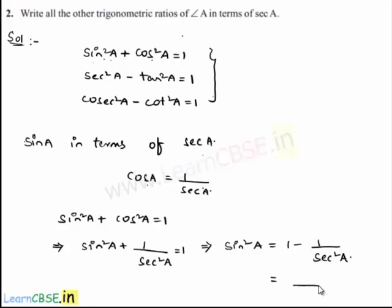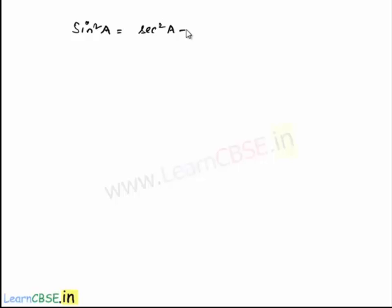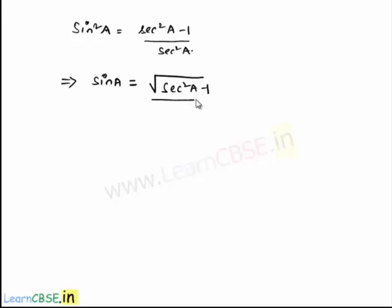Taking sec²a as LCM, the numerator becomes sec²a - 1. So sin²a = (sec²a - 1)/sec²a, which implies sin a = √(sec²a - 1)/sec a. Secondly, cos a in terms of sec a is simply cos a = 1/sec a.